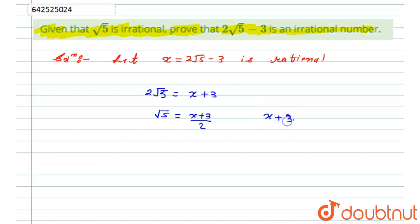will also be a rational number. And hence this whole p by q, means (x + 3) by 2, is